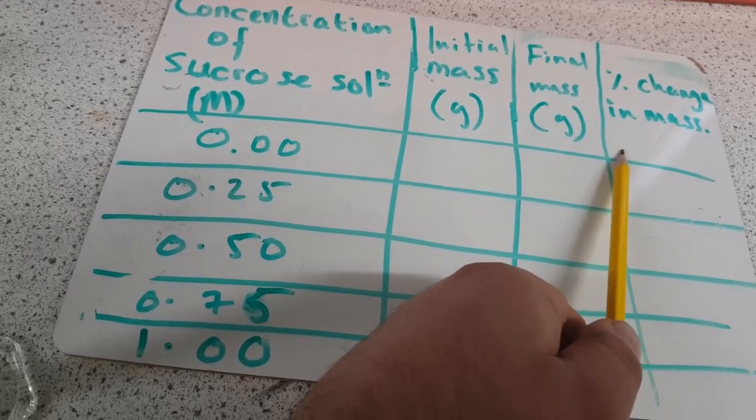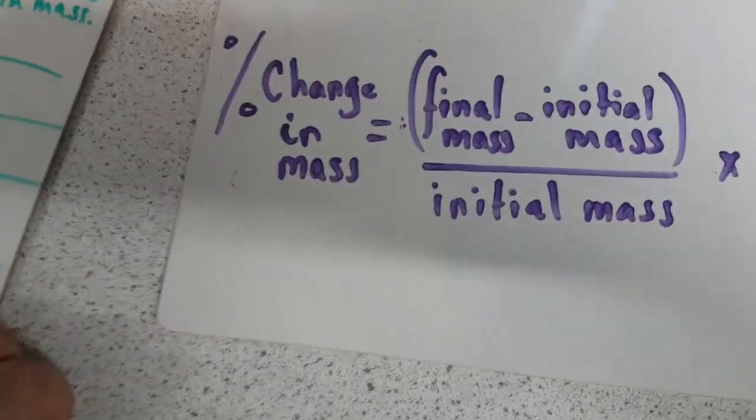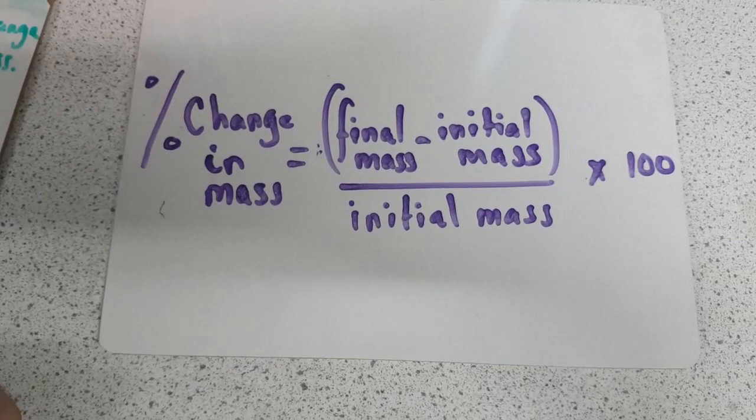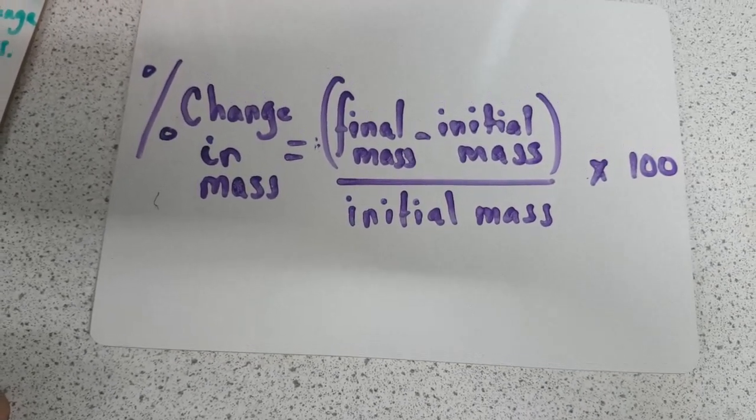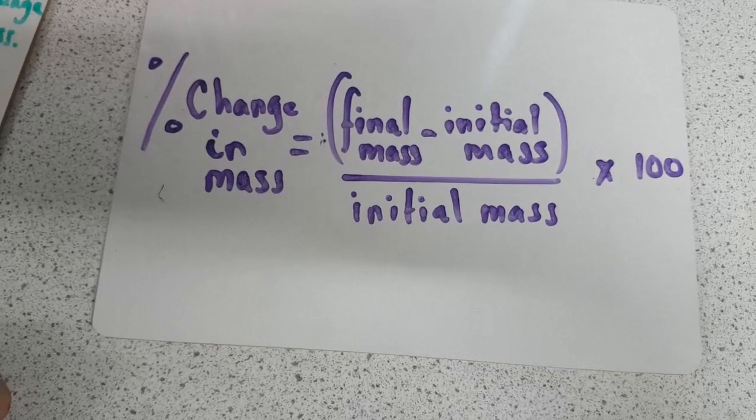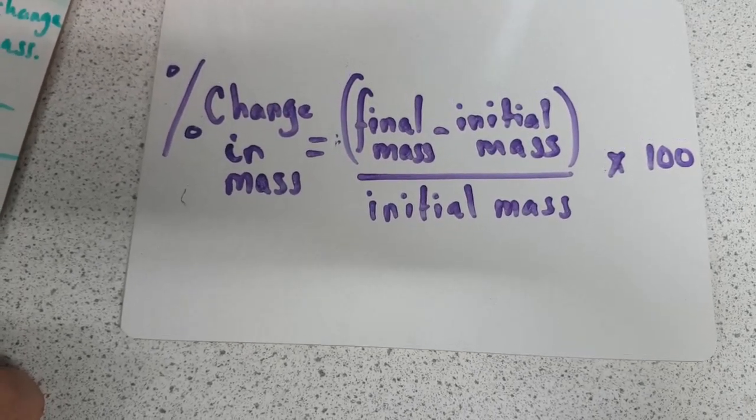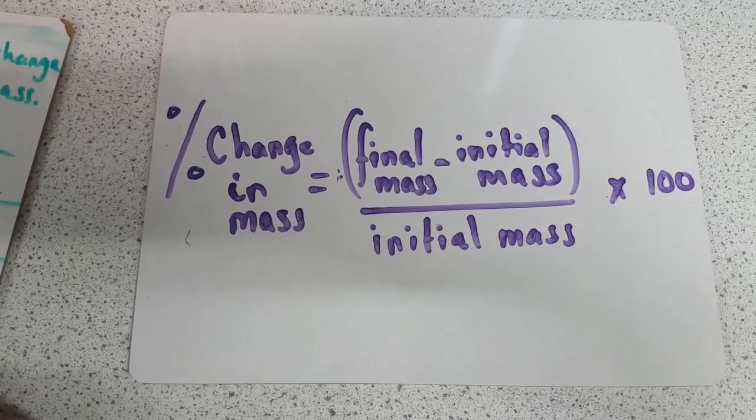However, to calculate this, there is an equation that we need to use. And the equation is as follows: percentage change in mass is equal to the final mass, take away the initial mass—so in other words, that's saying the change in mass—divided by the starting mass or the initial mass. And then we're going to multiply all of that by 100. Now we will get positive and negative values.